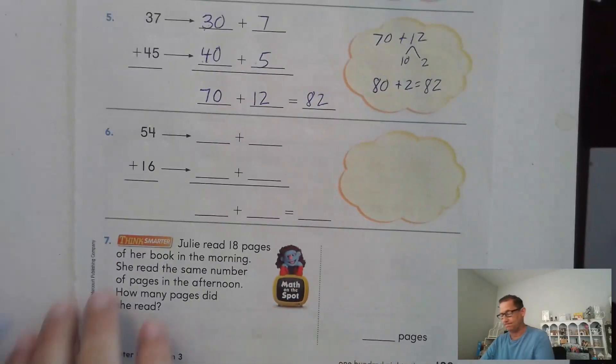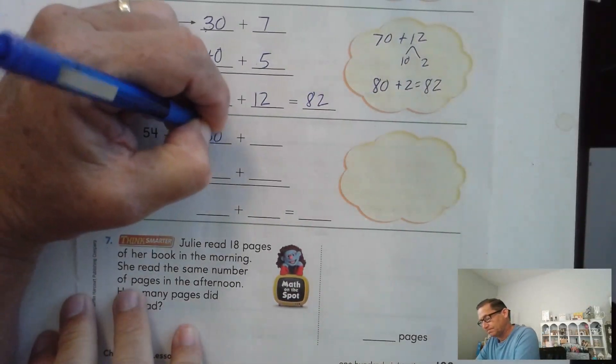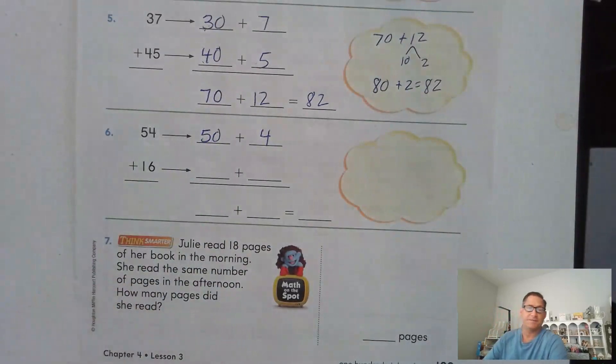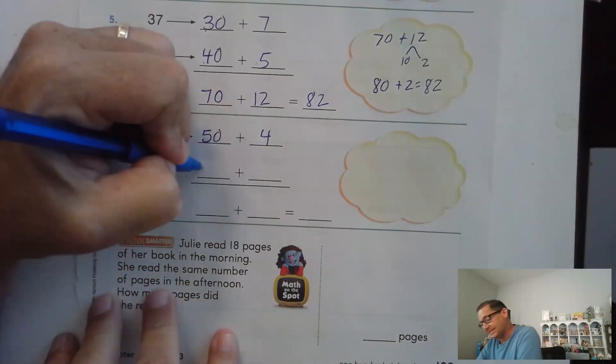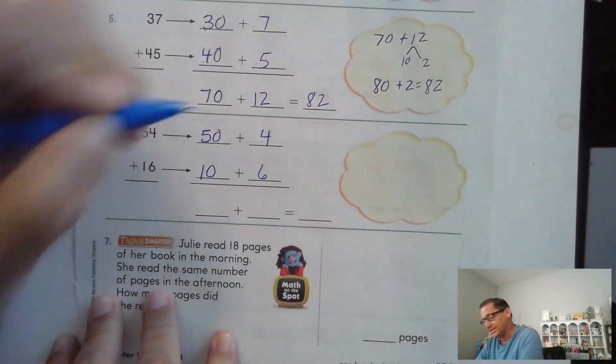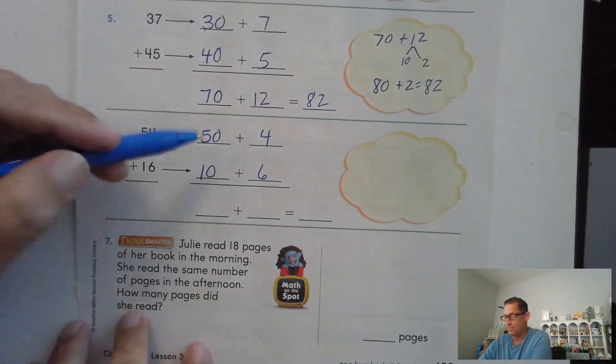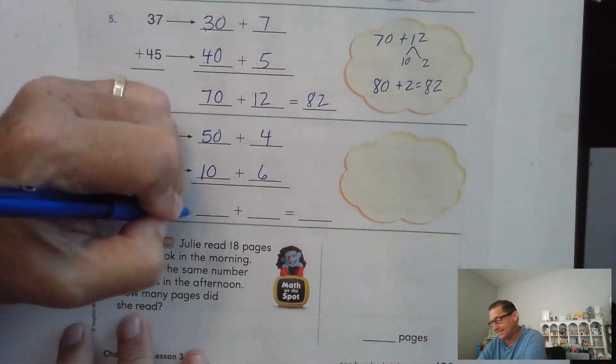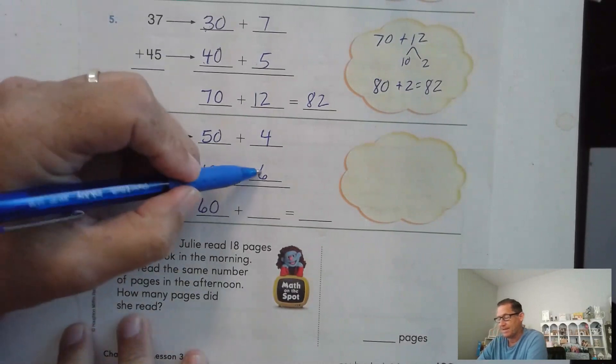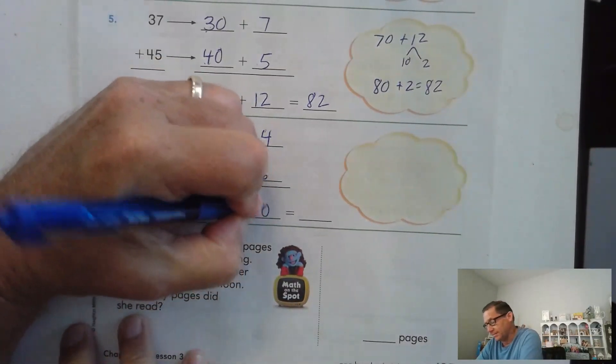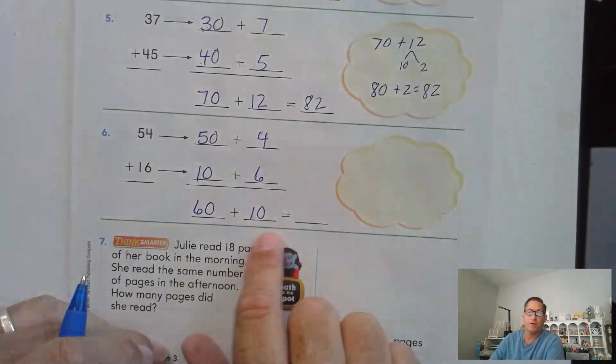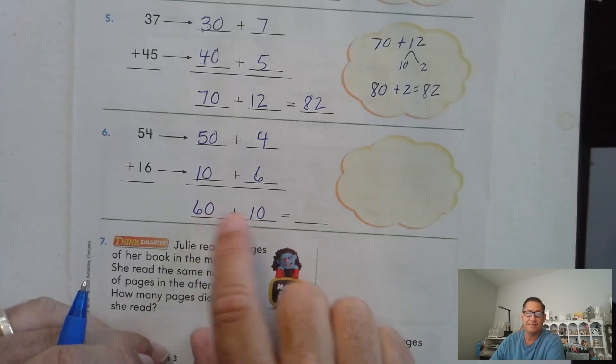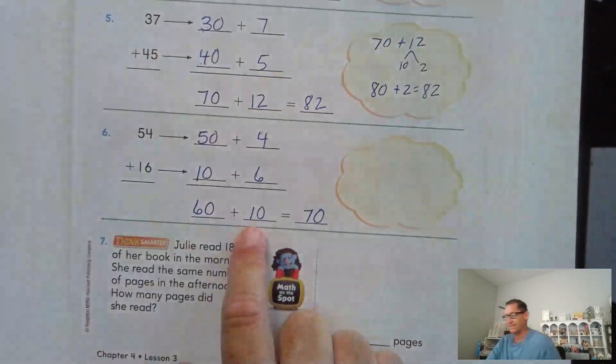Number 6. 54. Should have written 50 plus 4. And 16, you should have written 10 plus 6. 5 tens and one more ten is 60. And 6 and 4 we know is the sum of 10. Well, I'm not going to break this apart. That is a 10. 60 and one more 10? 70.